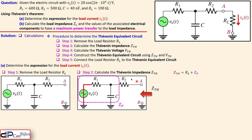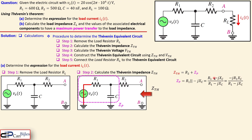The Thevenin impedance looking between nodes A and B is R2 plus ZP. ZP is the parallel combination of R1 and the capacitor reactance, written as −jXC. You can write this as the product divided by the summation, then move the minus sign in front for a clean expression.